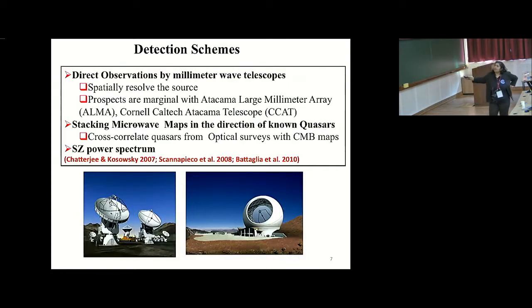We had another proposal that even if we don't resolve the sources, what about doing a stacking analysis with the available CMB maps, like the ones that were coming or ones that were existing, and then do a cross correlation between quasars from optical surveys like Sloan, and you look at CMB maps.